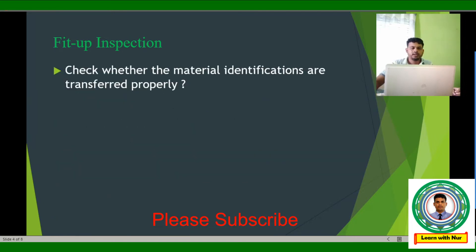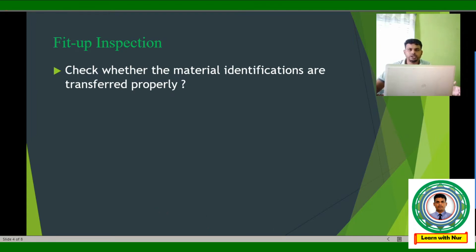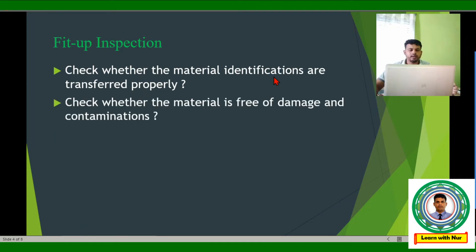We have to verify that material identification is transferred properly. For example, a six-meter pipe has heat numbers printed or punched by the manufacturer. If we cut a 500mm or one-meter piece, the original heat number is no longer present, so we must transfer that heat number to the cut piece. We also have to check that the material is free from damage and contamination.